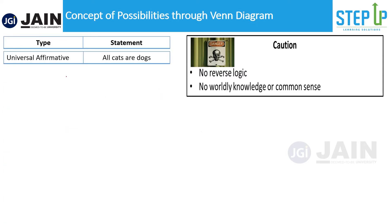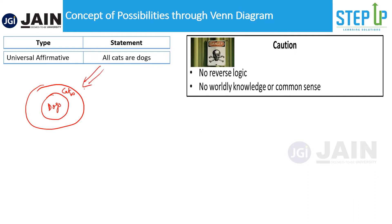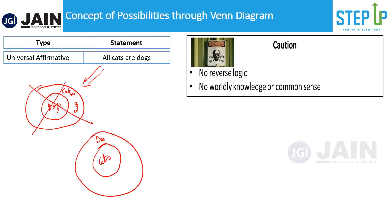The first statement is the universal affirmative: 'all cats are dogs.' Let's understand this through Venn diagrams. If I draw two separate circles for dogs and cats with no overlap, is that a true representation? Let's check — this element here, is this cat a dog? No. So that diagram does not satisfy the condition and is incorrect. How about placing the cats circle inside the dogs circle?